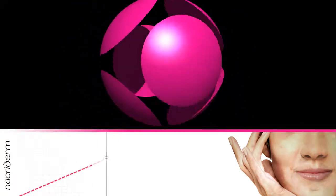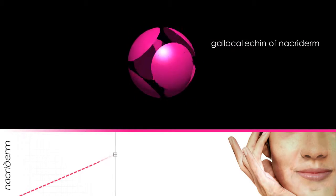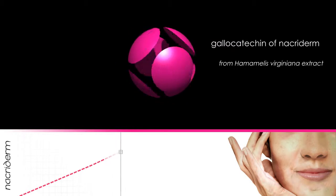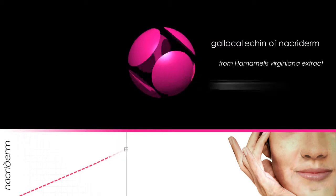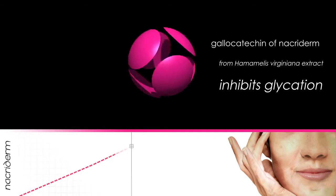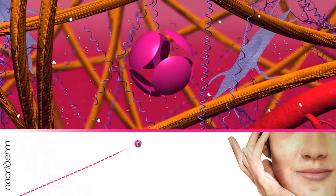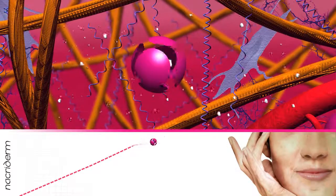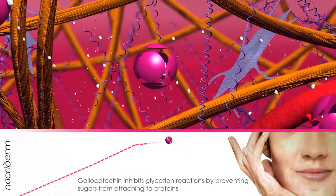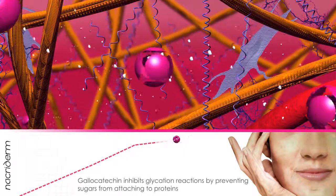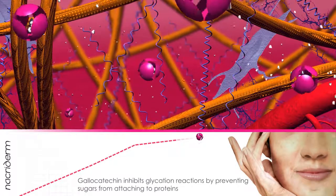Nacroderm has managed to isolate gallocatechin from Hamamelis virginiana extract. Gallocatechin inhibits glycation reactions by preventing sugars from attaching to proteins. They are formulated at different dosages and associated with complementary ingredients with the aim of controlling the consequences of skin glycation.